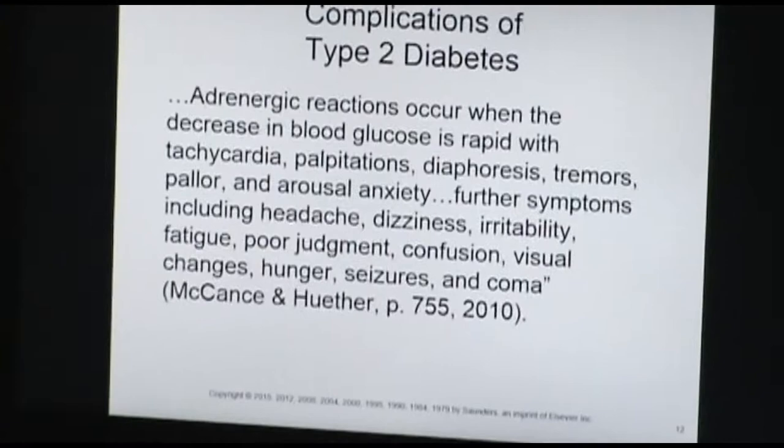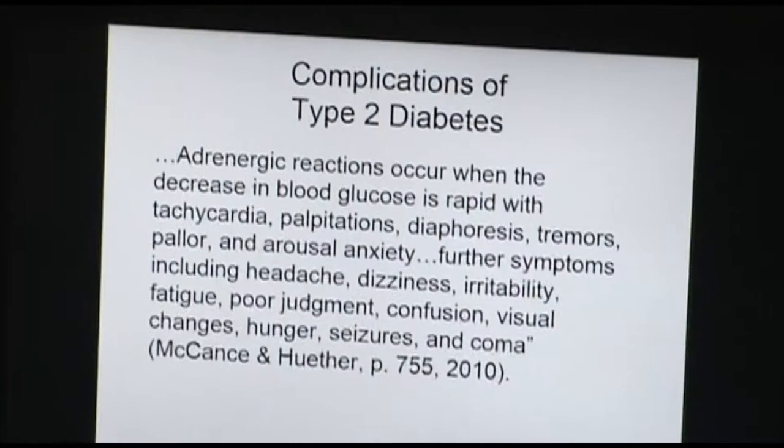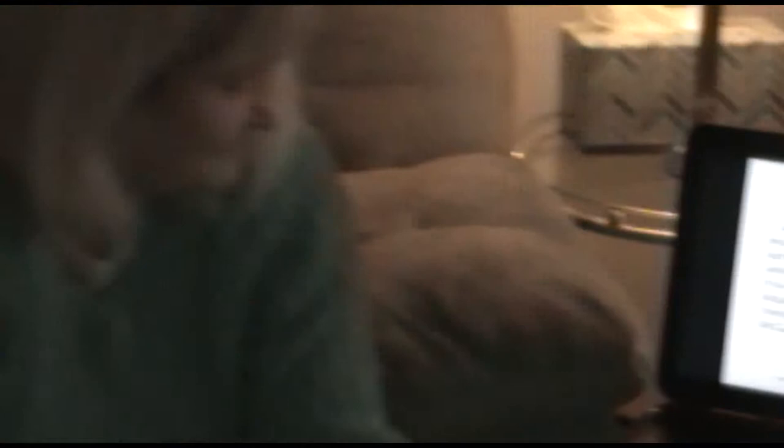Symptoms of hypoglycemia include tachycardia, palpitations, diaphoresis, tremors, pallor, and arousal anxiety. Further symptoms include headache, dizziness, fatigue, poor judgment, confusion, visual changes, hunger, seizures, and coma. This information was taken from the McCannson-Huther pathophysiology textbook.